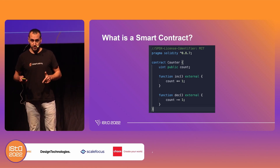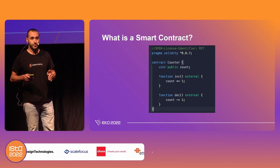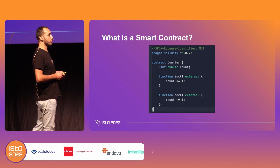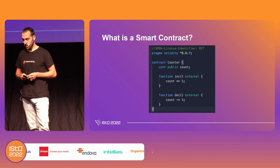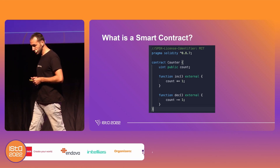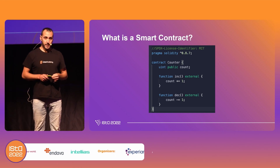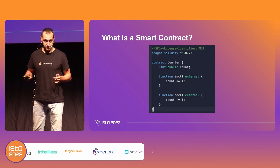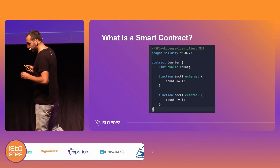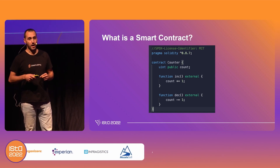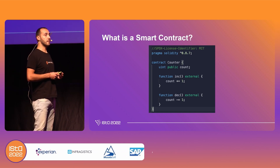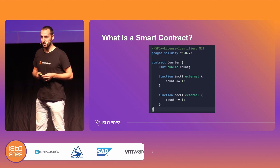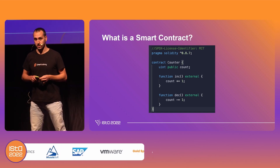This function can be run when certain predefined, predetermined conditions are met. Smart contracts are typically used to automate the execution of an agreement among participants, where all those participants can immediately get the outcome without any kind of third parties or intermediaries in the process and without any time loss.